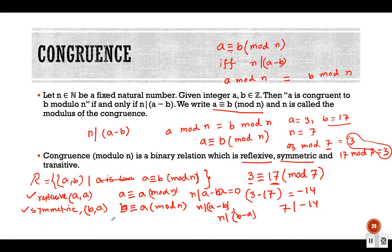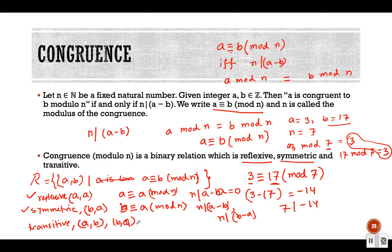Now, is the relation transitive? We need to prove that if a is congruent to b and b is congruent to c, then a is congruent to c. In terms of ordered pairs, if (a, b) and (b, c) are in the relation, then (a, c) should also be in the relation.